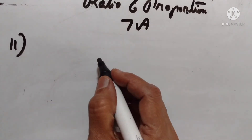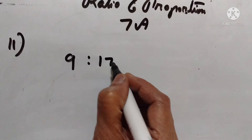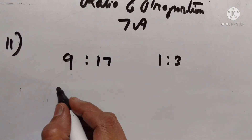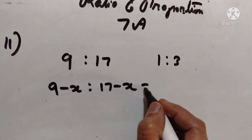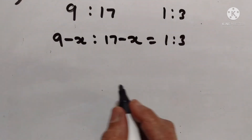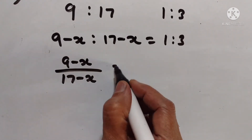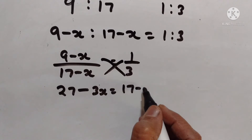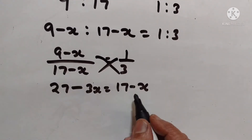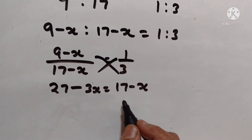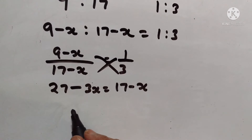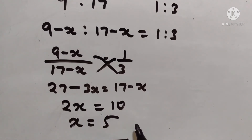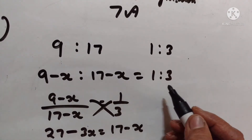Eleventh problem. What quantity must be subtracted from each term of the ratio 9 to 17 to make it equal to 1 to 3? Let the quantity subtracted from each term be x. So 9 minus x to 17 minus x is equal to 1 to 3. Cross multiplying: 27 minus 3x is equal to 17 minus x. So 2x is equal to 10, and x is equal to 5. Therefore 5 should be subtracted from each term to make it equal to 1 to 3.